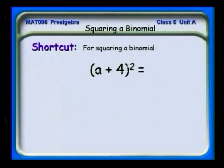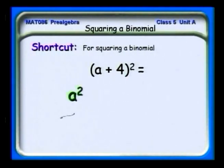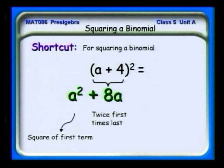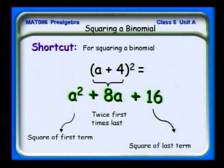Here comes our shortcut. We can do it by looking at (a + 4) squared — a fairly simple example that points it out very well. We have the square of the first term, twice the product of the first and last terms in the binomial, plus the square of the last term.